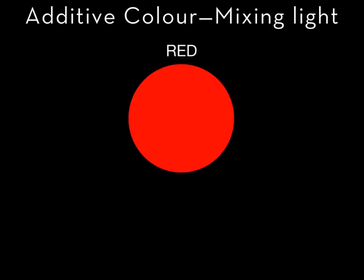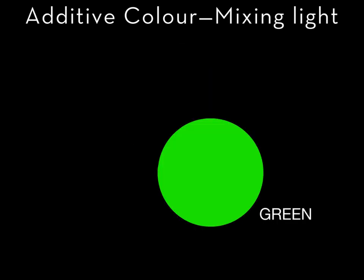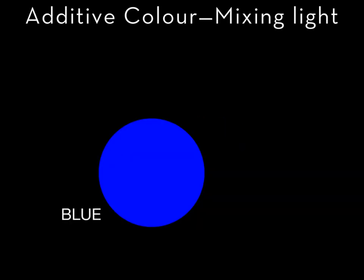In mixing colored light, I begin with a dark screen onto which I have projected the white text you see and left the rest of the screen blank. The three primary light colors, or primary additive colors, are red, green and blue.